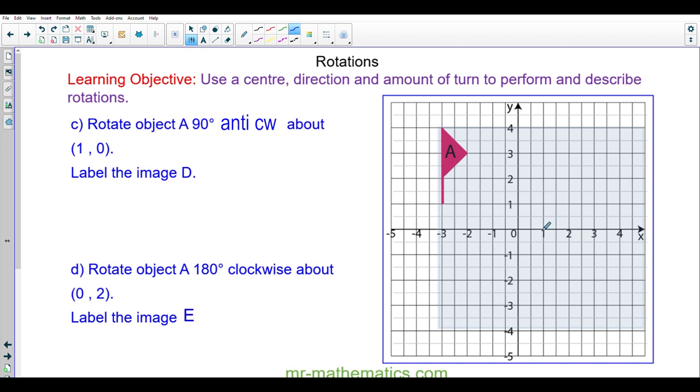Okay, so I'm going to mark off the center at one zero. I will put a point on each of the vertices and it is 90 degrees anti-clockwise. I'm going to mark off 90 degrees. And the rotation is complete when I've moved from around to here. And now I'm going to rotate the tracing paper from the center. And I can recreate the object by tracing the points. And I can label the new image D.